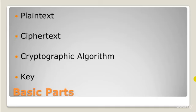The third part is the cryptographic algorithm — a mathematical formula used to scramble plaintext to yield ciphertext. Converting plaintext to ciphertext using a cryptographic algorithm is called encryption, and converting ciphertext back to plaintext using the same algorithm is called decryption.